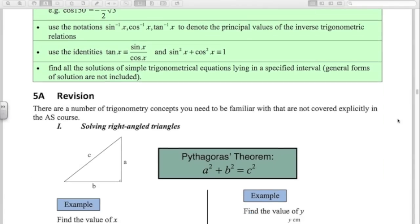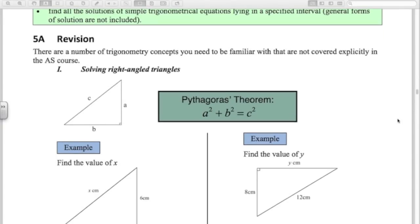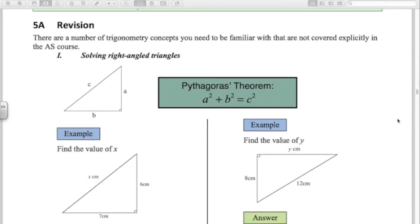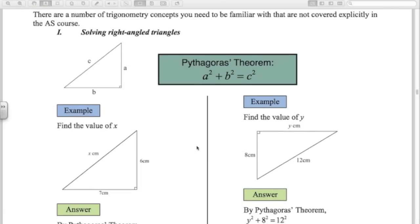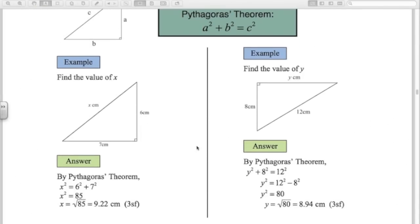So first up, Pythagoras' theorem. Solving right angle triangles and finding sides given two sides in the triangle. So you can see these first examples. One of them we don't know the hypotenuse, that's the longer side. One of them we don't know one of the shorter sides. A squared plus B squared equals C squared. So in each case, we use Pythagoras here and we get those two answers. I'm not going to spend a lot of time on this stuff because these are things that you should have been doing for a number of years.